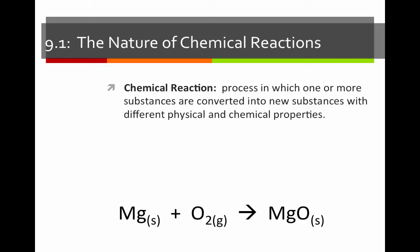For instance, we can take solid magnesium and react it with gaseous oxygen to form magnesium oxide. Magnesium oxide is a white flaky powder, whereas magnesium is a shiny metal and oxygen is a clear gas. The product, magnesium oxide, has distinctly different properties than the reactants that formed it.